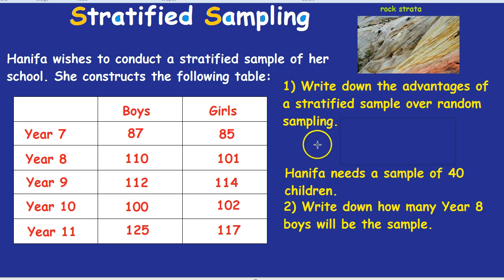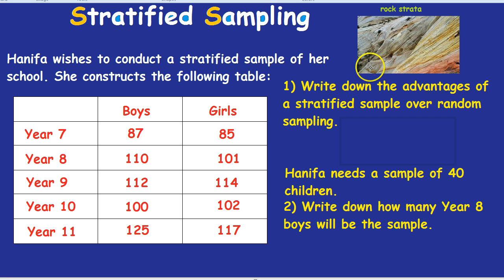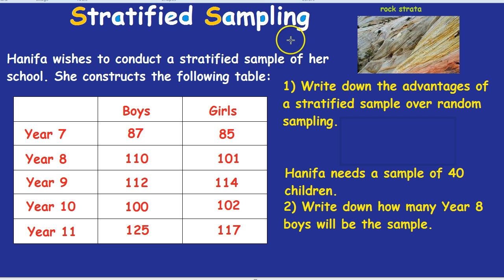The word strata means layer. You can see here some rock strata — just layers and layers of rocks. In this case, stratified sampling is focusing on the different layers or different groups of the sample.